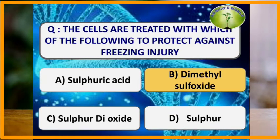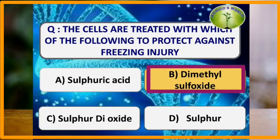The cells are treated with which of the following to protect against freezing injury? To protect cells against freezing injury, they are treated with DMSO, that is dimethyl sulfoxide.